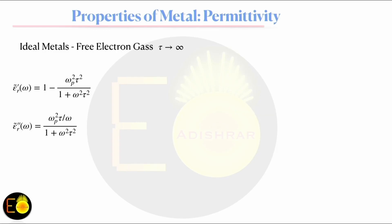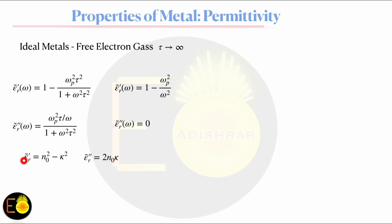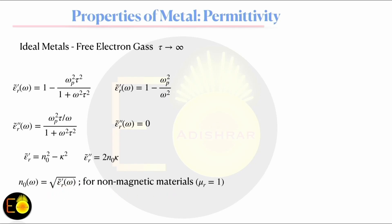Now let's discuss the ideal metal, known as the free electron gas. For an ideal metal, tau — the mean free path between two successive collisions — is considered infinite, meaning electrons move like a gas with no collisions. Setting tau to infinity, the real part of the permittivity becomes 1 minus (omega_p/omega)^2 and the imaginary part becomes zero. Consequently, the extinction coefficient is zero, and the ordinary refractive index is the square root of the real part of the permittivity, valid for non-magnetic materials where relative permeability mu = 1.